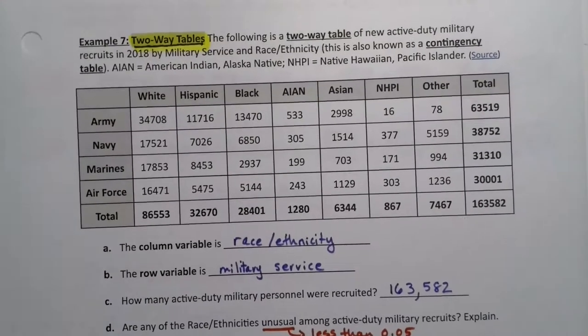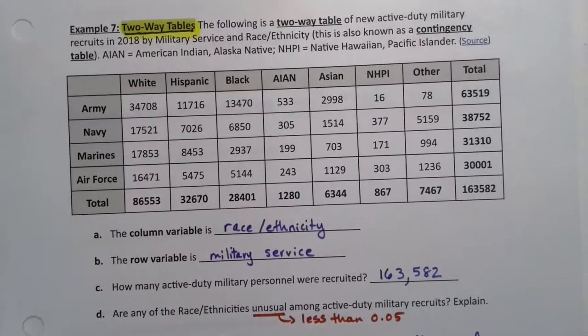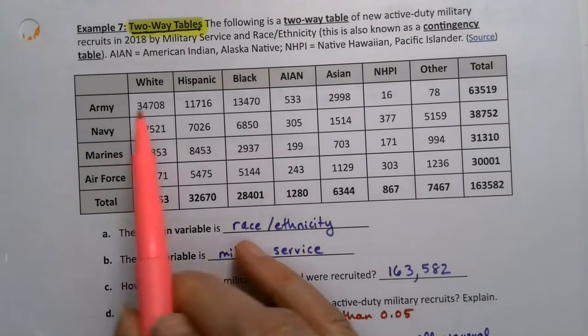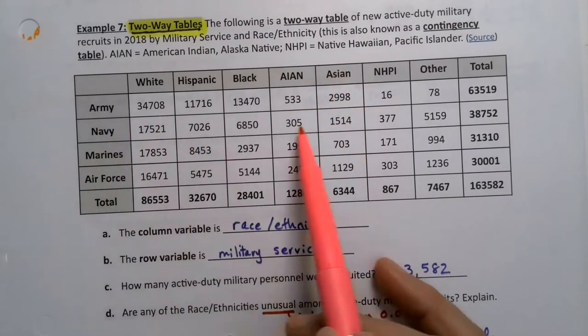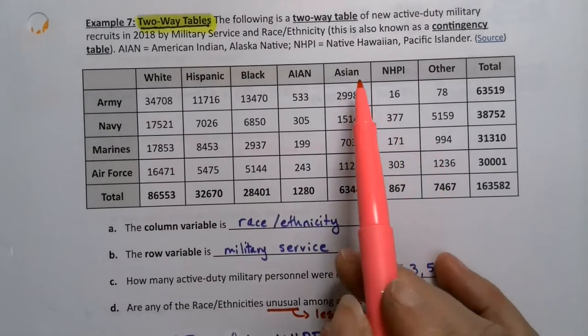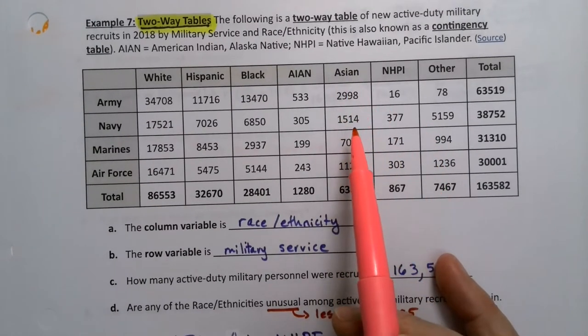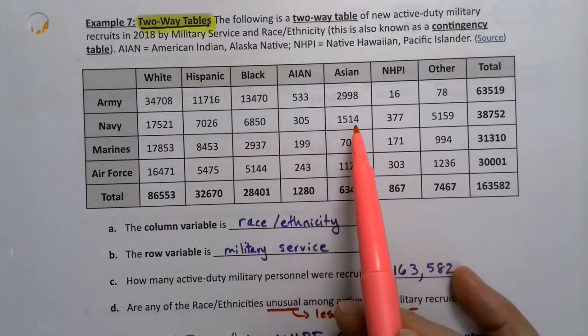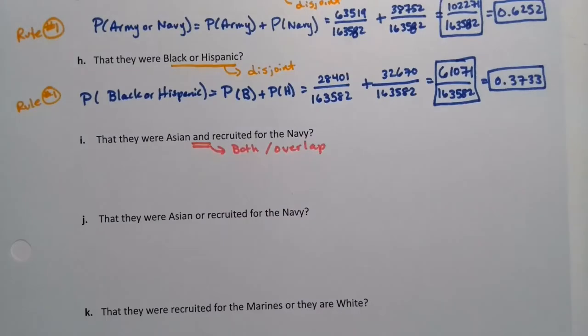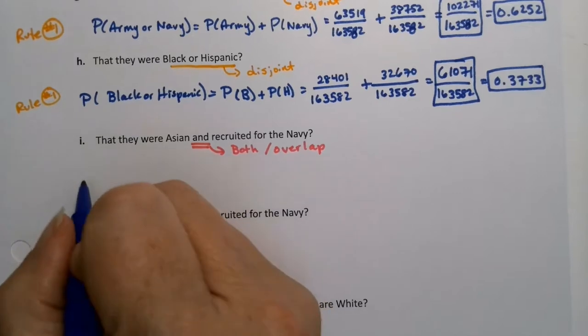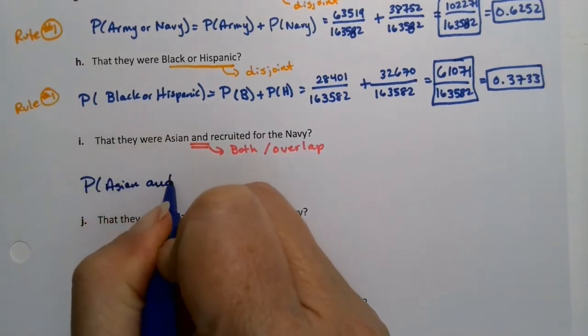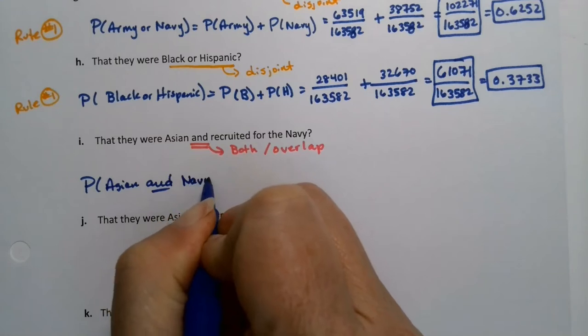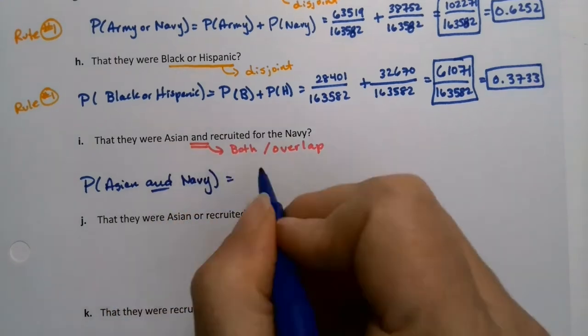All right, so Asian and what was I looking for? Navy. Okay, so Asian is right here. Navy is right here. And so what you're looking for is what's the group that's in both, that's both Asian and Navy. It's right there, right? You're looking for the group that's both. So you want the probability of Asian and Navy. There's no rule for this. This is just understanding what the table is showing you.